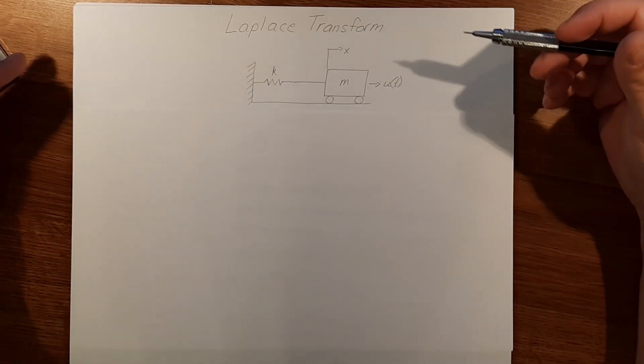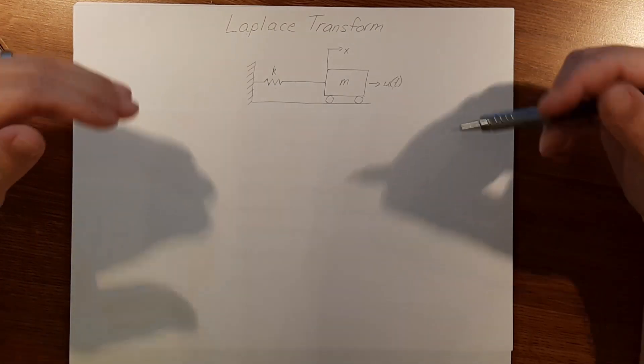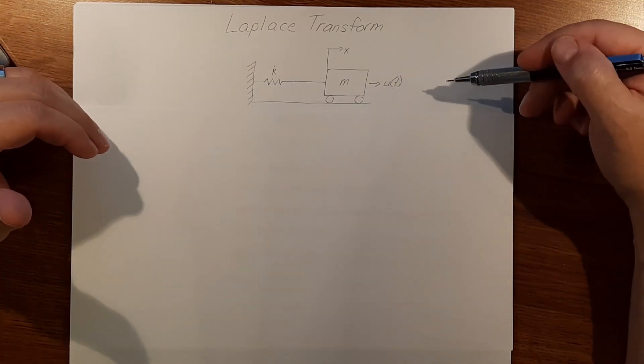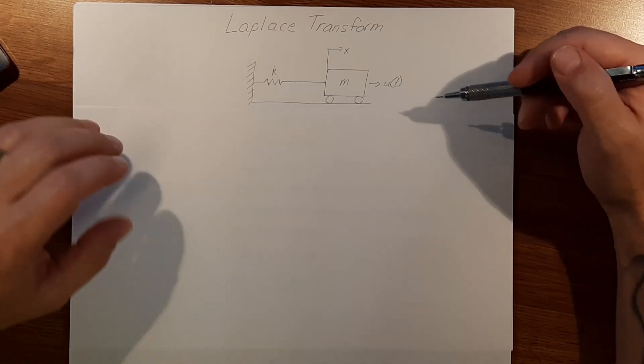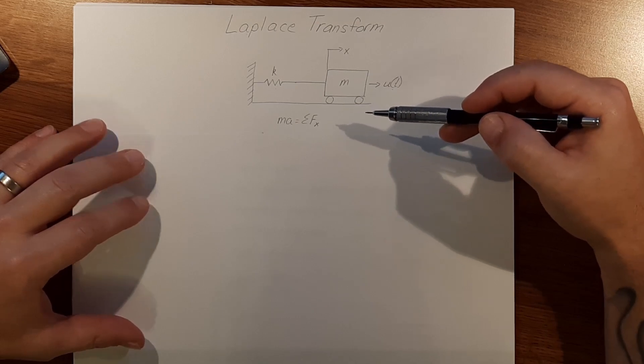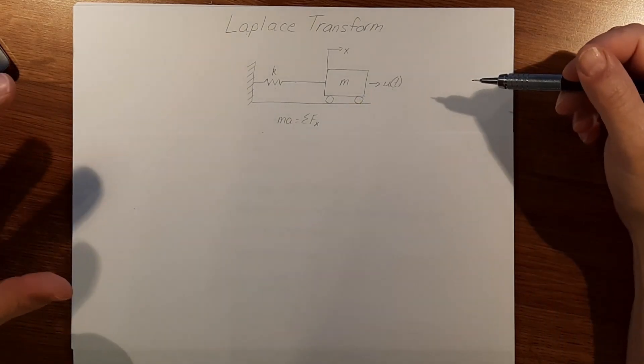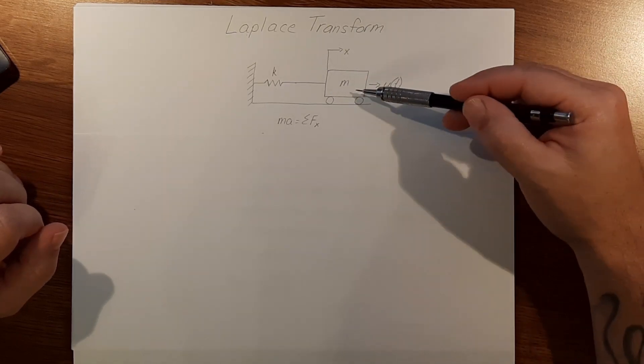The first thing we need to do is write our differential equations. We need to mathematically model this system so we can find a Laplace transform to solve it. We know that mass times acceleration equals the sum of all forces acting on this mass.